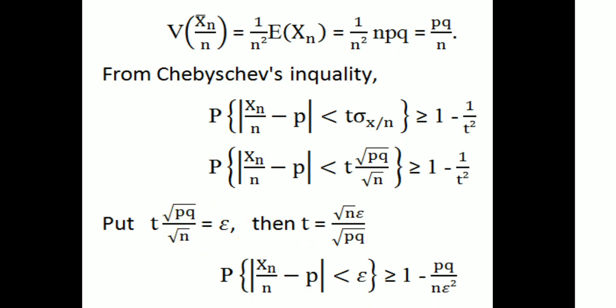We choose t equal to root(N) times epsilon divided by root(pq). So the probability of |Xn/N minus p| less than epsilon is greater than or equal to 1 minus pq/(N times epsilon squared). Since pq tends to 0 as N tends to infinity, the term 1 minus pq/(N times epsilon squared) tends to 1.